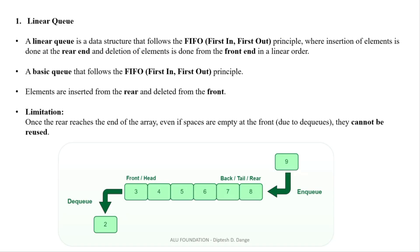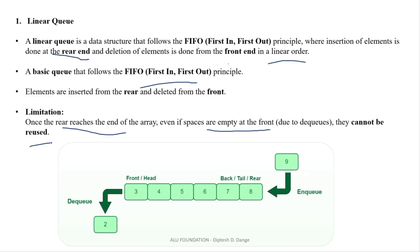A linear Queue is a data structure that follows FIFO principle, where insertion of element is done at the rear end and deletion of element is done at the front end in a linear order. Linear Queue uses the FIFO principle. Front end और rear end — दो pointers होते हैं, front pointing to the first element in the Queue and rear pointing to the last element in the Queue. Limitation यह है: once the rear reaches the end of an array, even if spaces are empty at the front, they cannot be reused. So this is a disadvantage, जो हमने circular Queue में remove किया है।